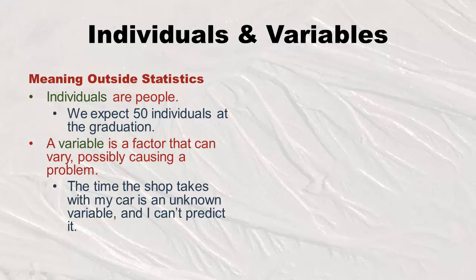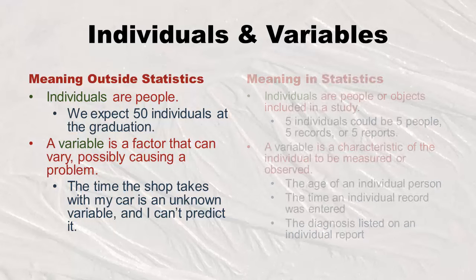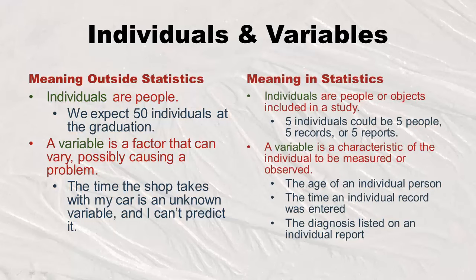I promised I'd tell you the statistics version of individuals and variables. Outside statistics, you know that individuals are people and a variable is a factor that can vary. But in statistics, individuals are people or objects included in a study. So if you're doing an animal study with mice, those would be the individuals. In a randomized clinical trial with Alzheimer's patients, the patients are your individuals.